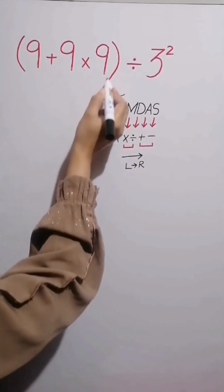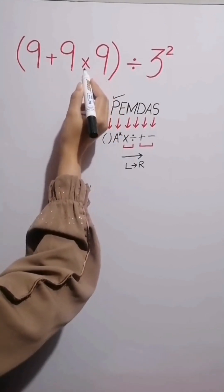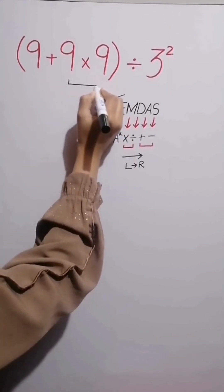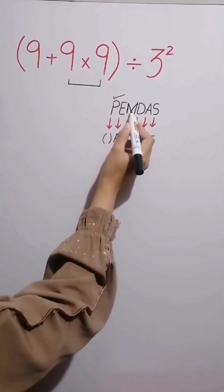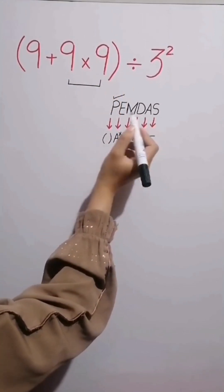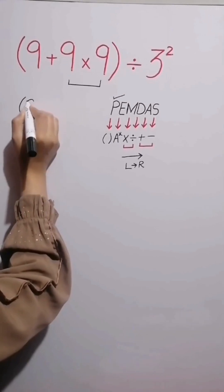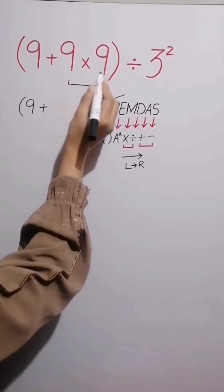Inside the parentheses, we have addition and multiplication. First we simplify the multiplication because multiplication has higher priority than addition. Now the expression becomes 9 plus 81.